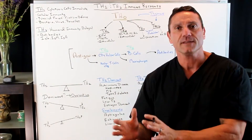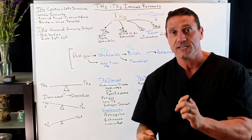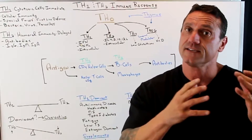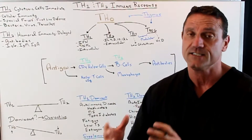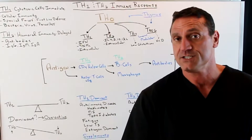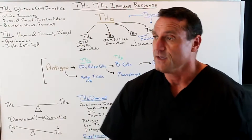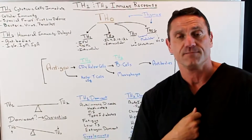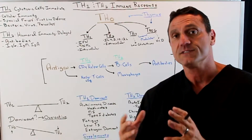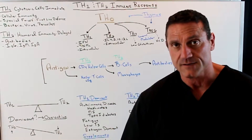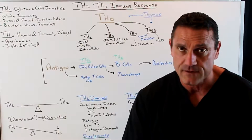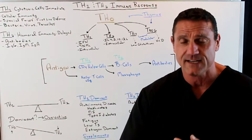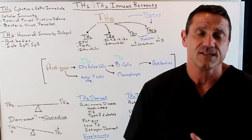I want to talk about the immune system, and in particular the first line defense and the second line defense — that is the Th1 and the Th2 system. We have a gland called the thymus gland, right in the sternum, and it's responsible for our immune cells. We produce a lot of them in our youth, and as we get to about the age of 18, 19, 20, it becomes essentially useless.